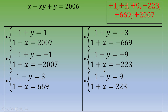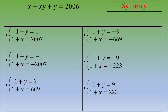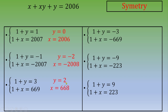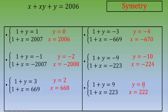Solving these six systems one by one, the second gives y equals negative 2 and x equals negative 2008. The third gives y equals 2 and x equals 668. The fourth gives y equals negative 4 and x equals negative 670. The fifth gives y equals negative 10 and x equals negative 224. The last gives y equals 8 and x equals 222. Keep in mind there is a symmetry between x and y.